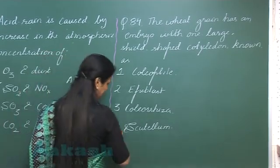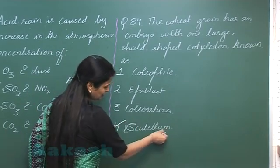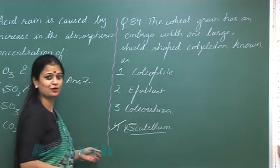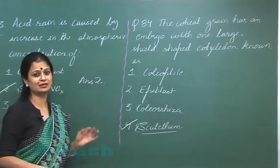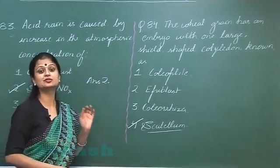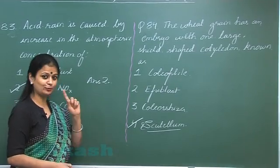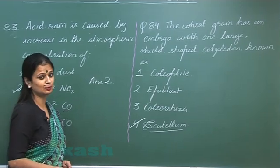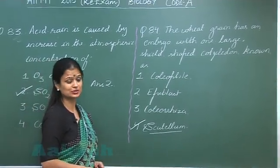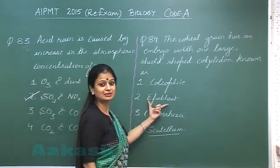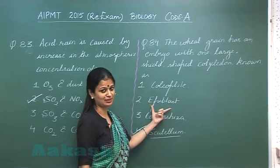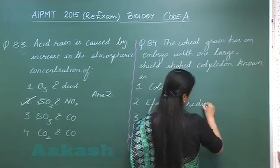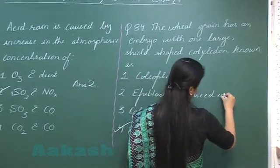This is the fourth option. Now the term scutellum is derived from the word scutella. Scutella means shield shape, and one of the cotyledons seen in wheat is reduced. The reduced cotyledon is known as epiblast. So this is the reduced one.